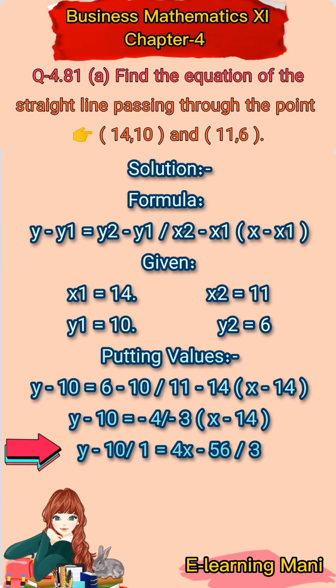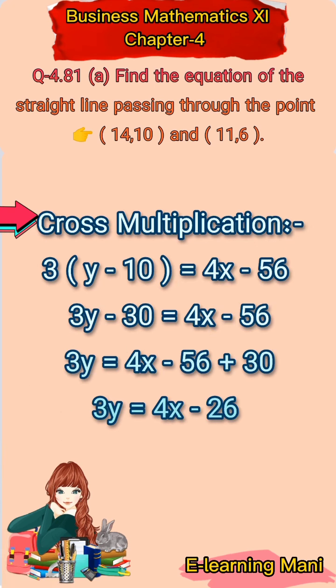So ये आएगा only 4। अब ये 4 bracket के साथ multiply होगा: 4x and 4 × 14 is equal to 56। 4 positive है लेकिन minus 14 है, plus minus minus होता है, तो हम minus 56 लिखेंगे। Divide में 3 आएगा। y minus 10 upon 1 है। So अब हम cross multiplication करेंगे — 3 multiply होगा y minus 10 से, and 1 multiply होगा 4x minus 56 से।